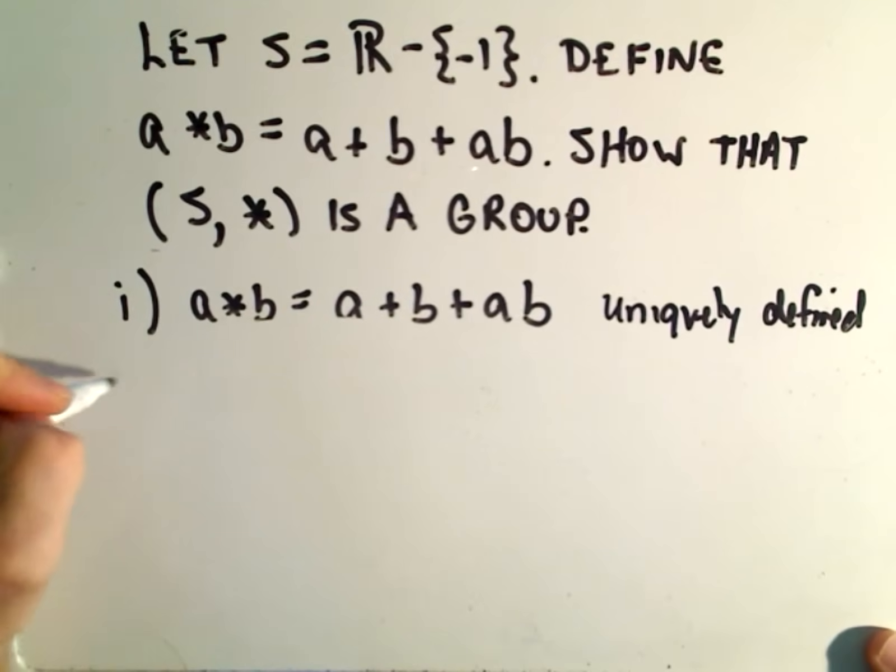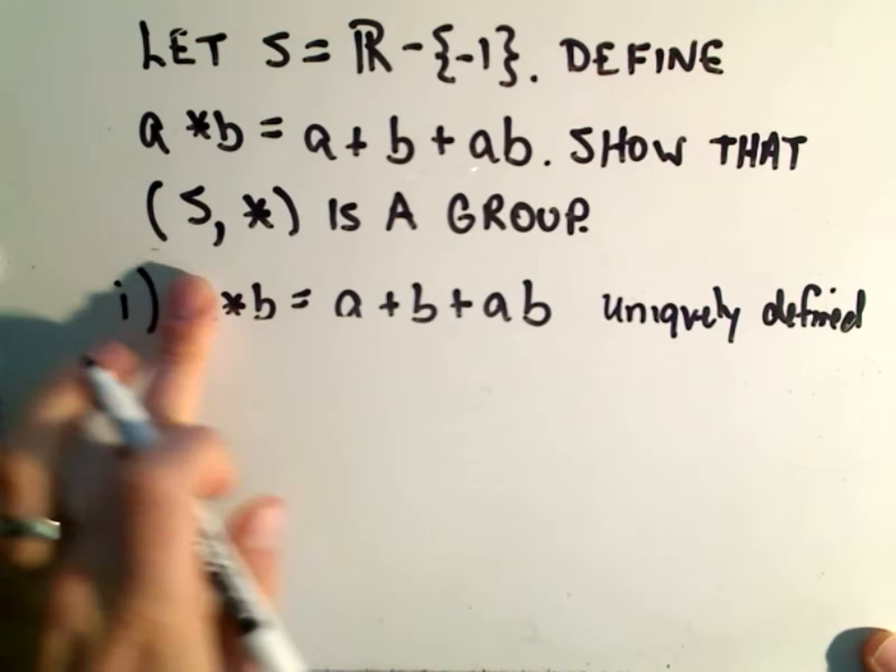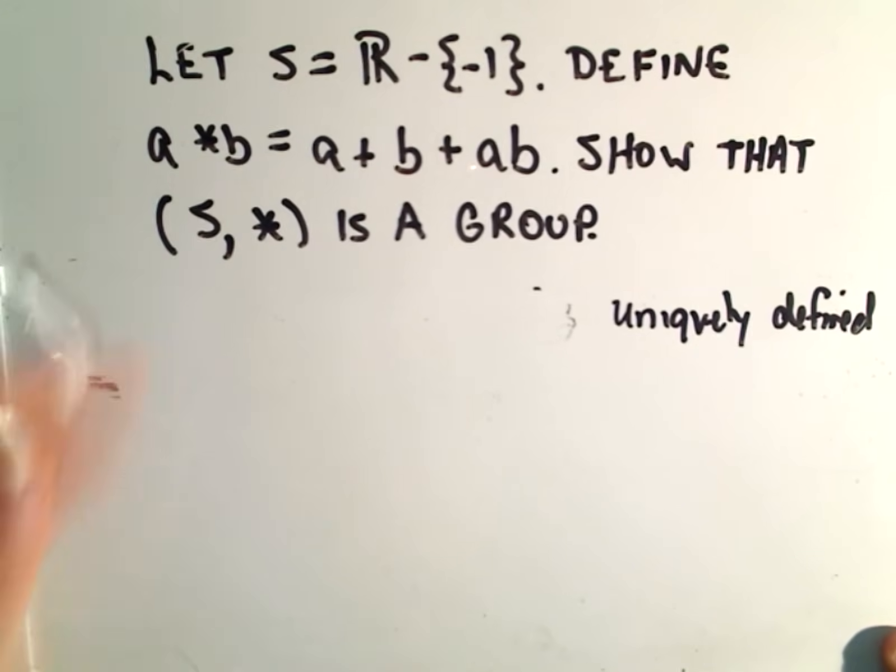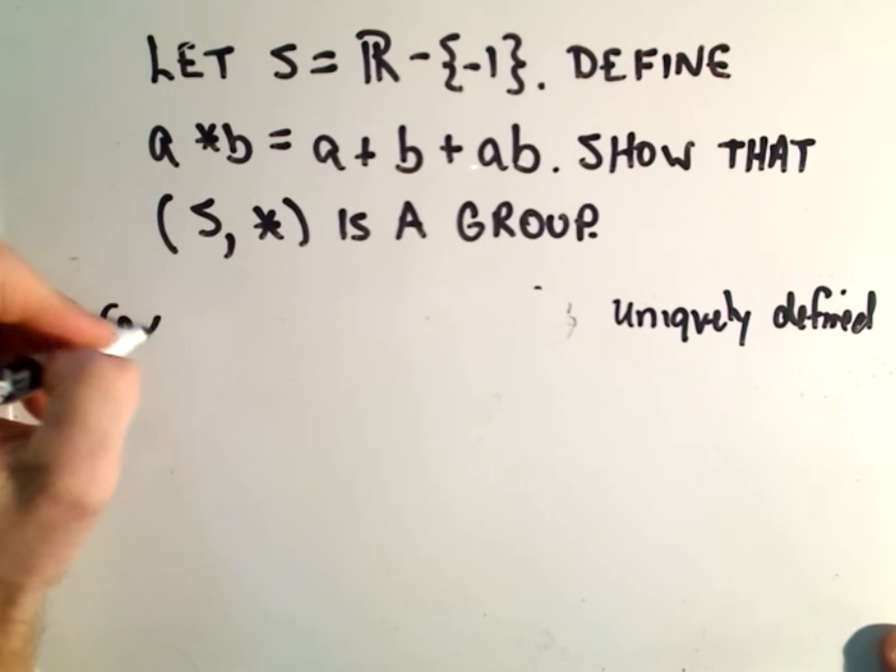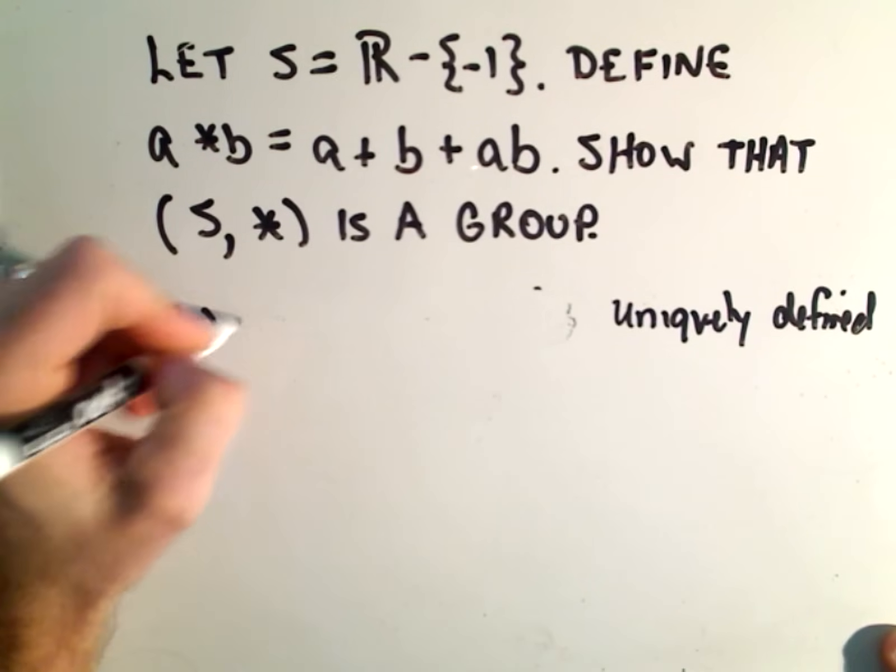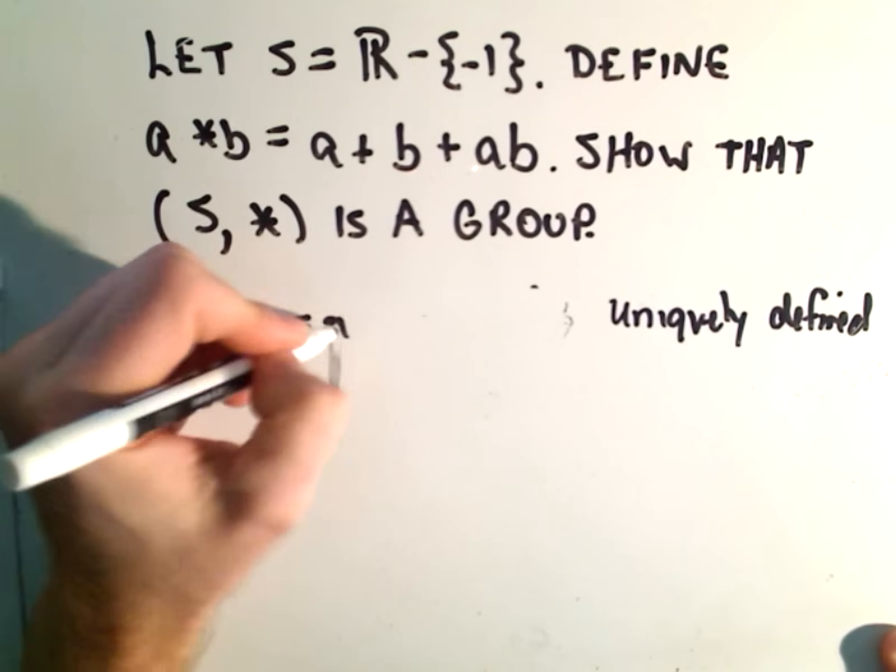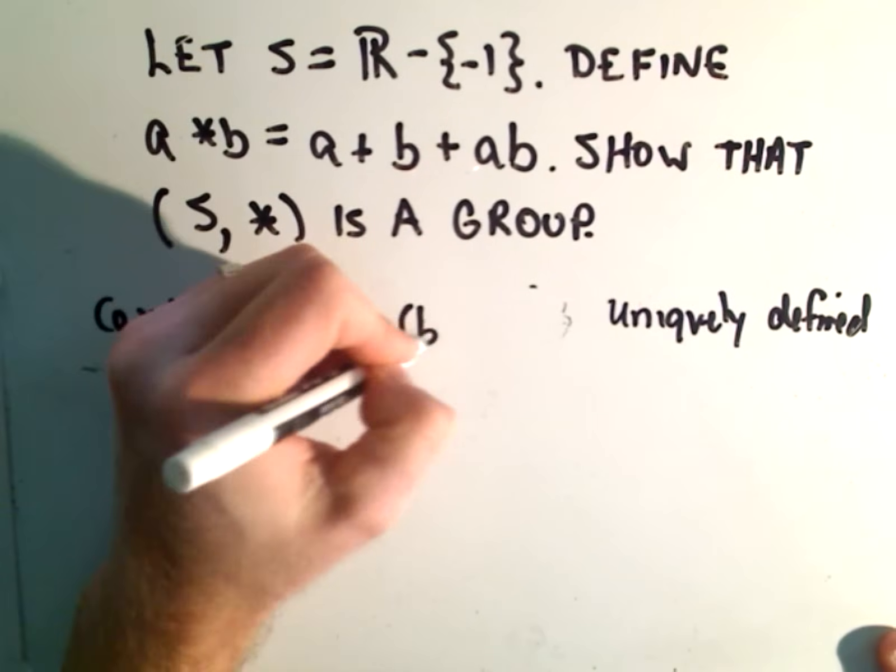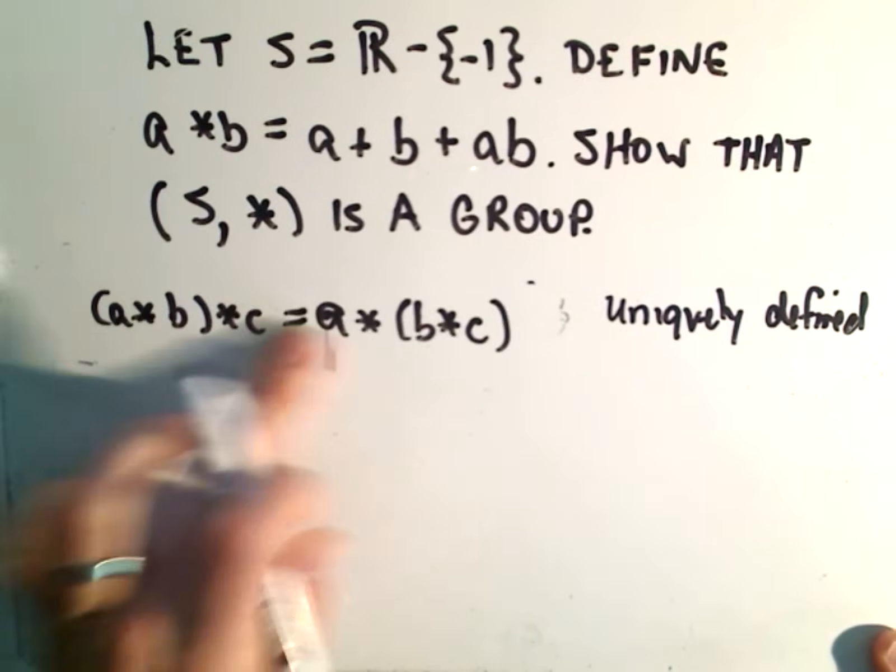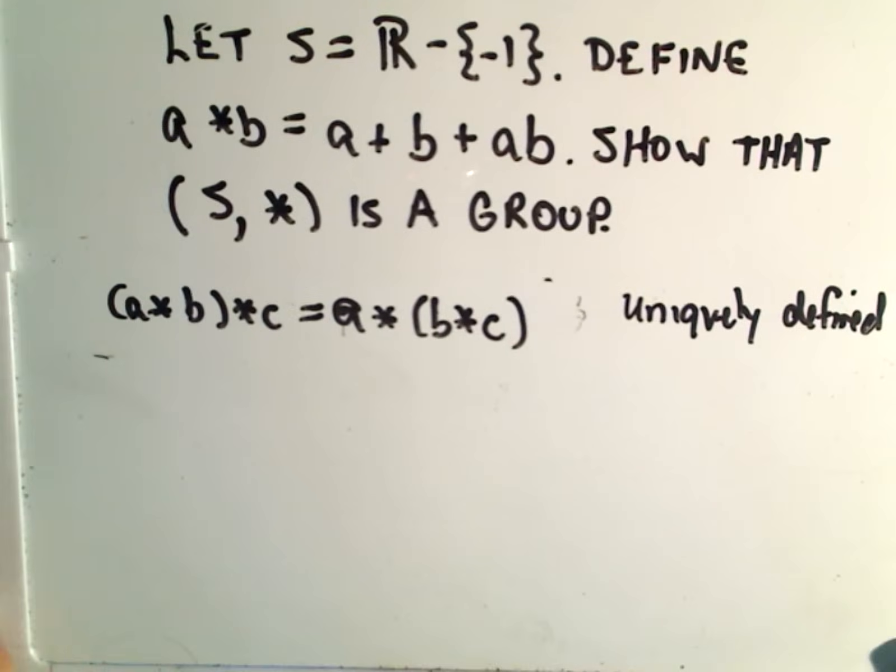Okay, associativity. Associativity would be tedious to show here. We have to show that A star B star C with different groupings gives the same result.